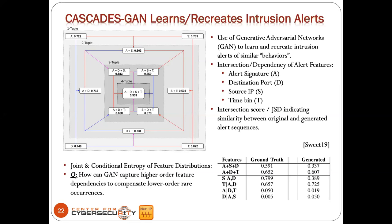The graph shows four features — A, D, S, T. The GAN recovers signature and destination port pretty well, but as you look at higher-order joint distributions, the generated alerts versus ground truth get worse. The blue lines show that the alert signature and destination port combination goes from 0.722 to 0.749 to 0.716 — recovered pretty well. But some higher-order combinations are not recovered well. We're asking: why? How can we configure GANs — changing the loss function — to capture higher-order feature dependencies?